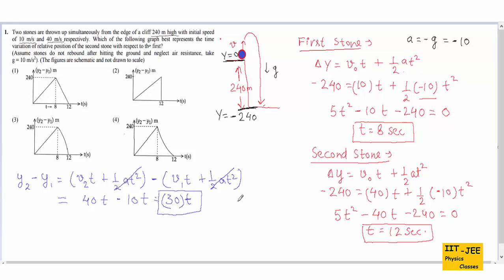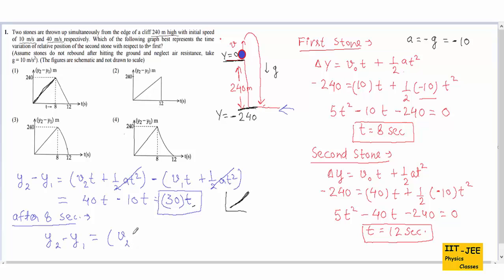The equation y2 minus y1 equals 30t is linear, so it gives a straight line on the graph — which is why all the answer graphs show a straight line portion. However, the first stone is only in the air until 8 seconds. After 8 seconds, y1 is fixed at minus 240, and y2 equals v2·t plus half·a·t², so the equation now contains a t² term, which gives a curved graph.